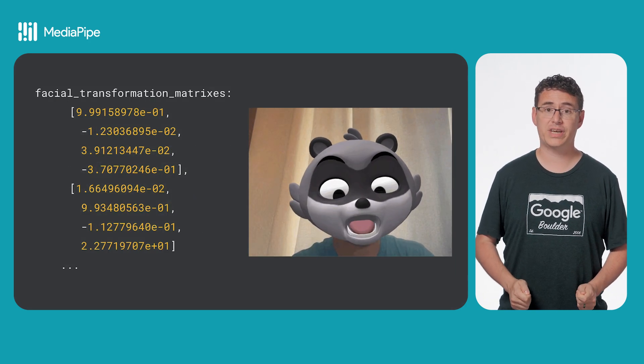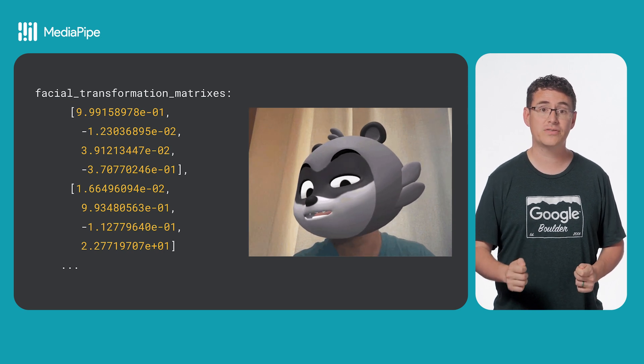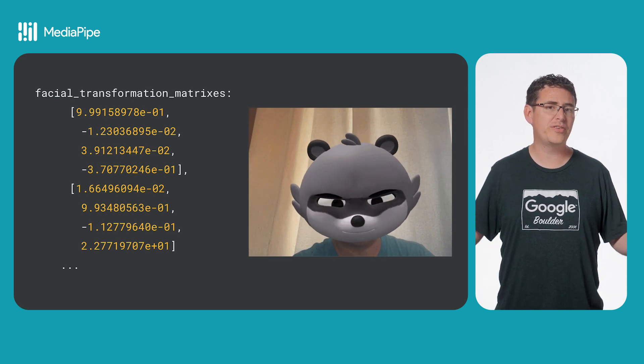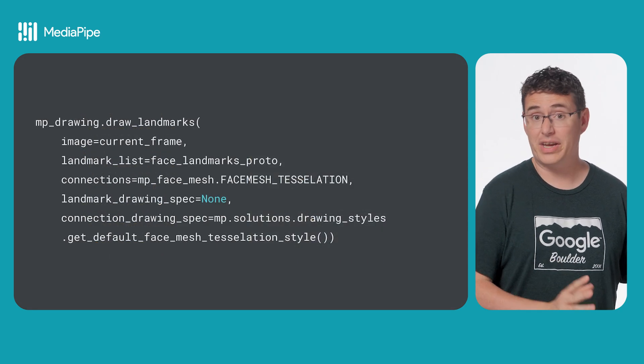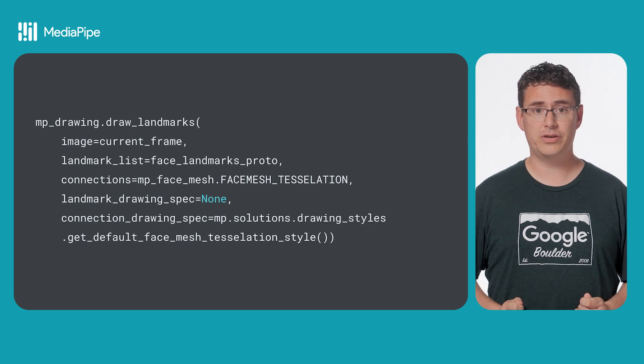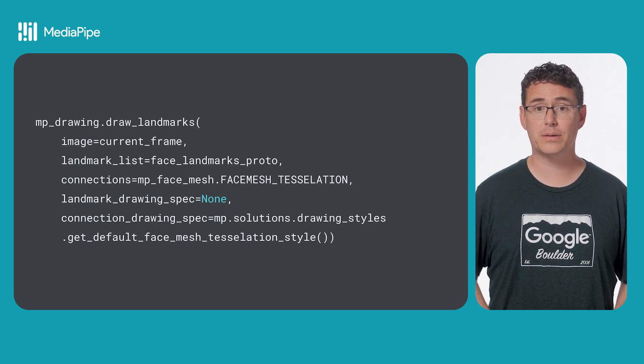The last thing this result object contains is a set of matrices you can use for transforming faces, which is useful if you want to do UI effects like applying an augmented reality filter to the user. There are also drawing utilities to help you draw face components in your apps. This code snippet draws the face mesh tessellation — the small lines between the landmarks — and we also support predefined connectors for things like the outlining oval on the face and lips, the eyes, irises, and brows, and a superset of eyes, eyebrows, lips, and the face oval that we call contours.